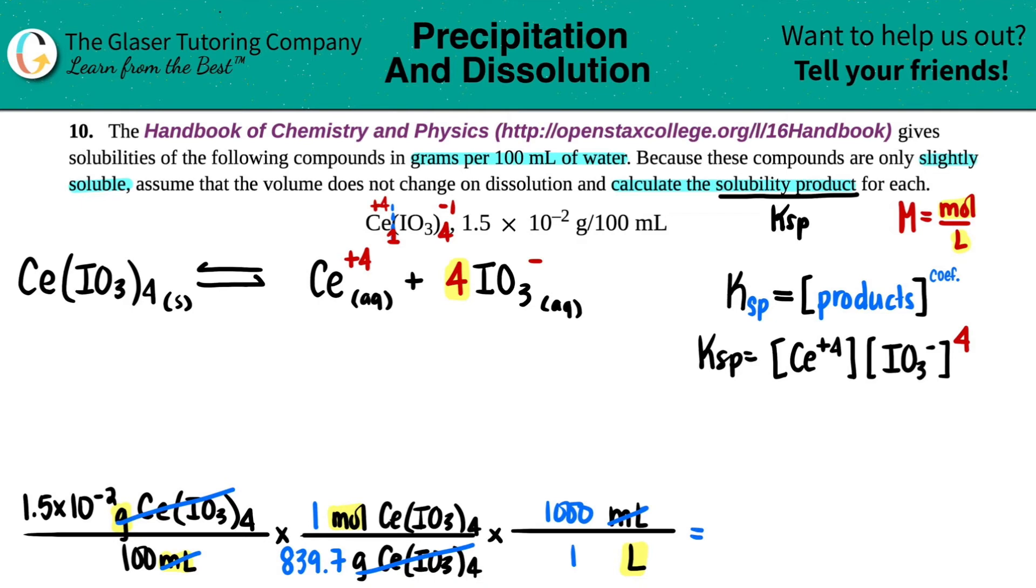Let's figure out what that number is. 1.5 times 10 to the negative second divided by a hundred, then divided by 839.7 and then times by a thousand. I'll give myself a couple more sig figs. 1.786 times 10 to the negative fourth molarity. That is moles divided by liters, right? But it's the same thing as molarity.